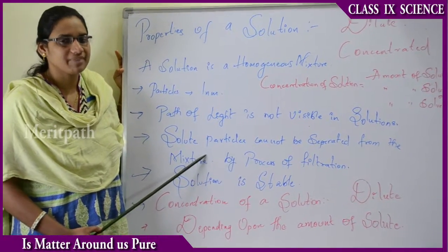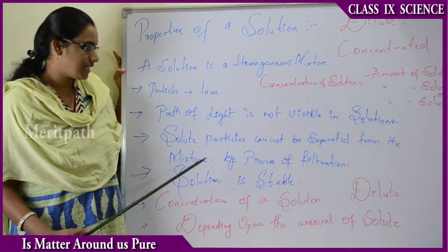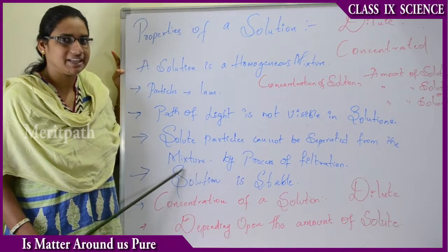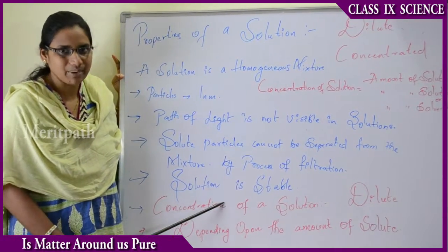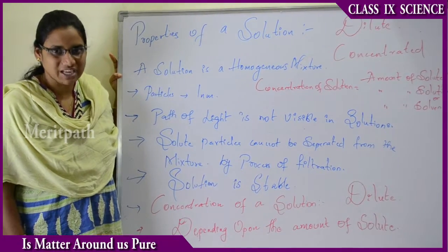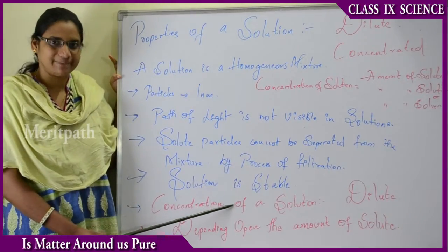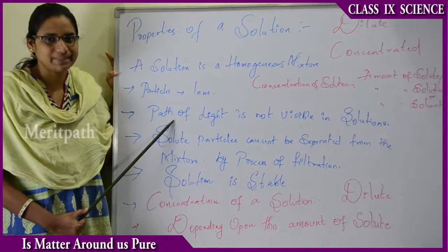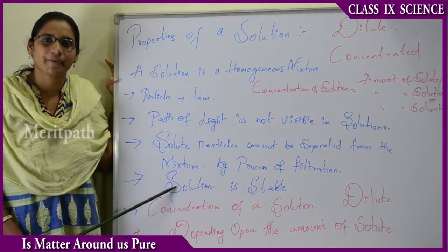For example, in sugar water, the sugar is dissolved and cannot be separated by filtration. The third property is that a solution is stable — the solute particles do not settle down; they remain dissolved. So the three properties of a solution are: light path is not visible, solute cannot be separated by filtration, and the solution is stable.